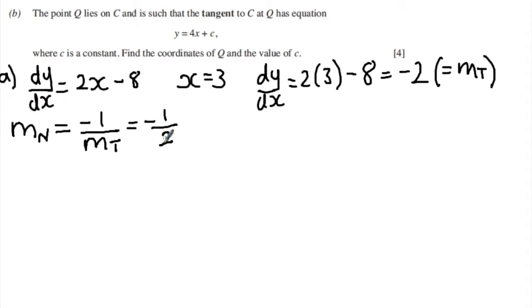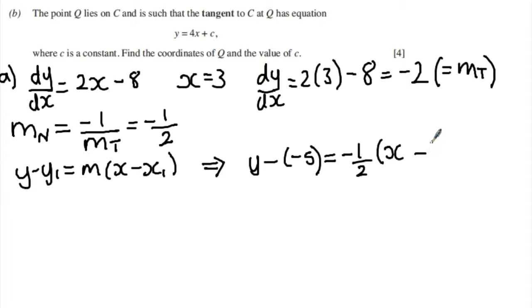Now, we have the gradient for the normal. Now we have a point for the normal, I can find the equation of the normal. So remember, we want to use this y minus y1 equals m times x minus x1. Substitute our values in. So I get y minus minus 5 equals minus 1 half times x minus 3.